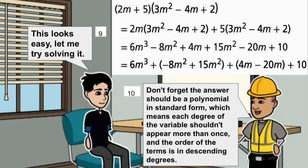Don't forget that the answer should be polynomial in standard form, which means each degree of the variable shouldn't appear more than once. And the order of the terms is in descending degrees.